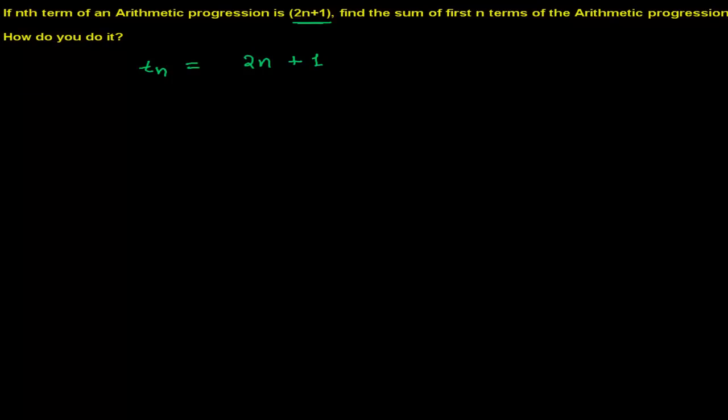In this way, if you go, what you can do here, see here if n is 1, the first term will be 2 times 1 plus 1, so it will be 2 plus 1, that is 3. In this way, if you go, t2, you will get 2 times 2 plus 1, so you will be left with 4 plus 1, that is 5.